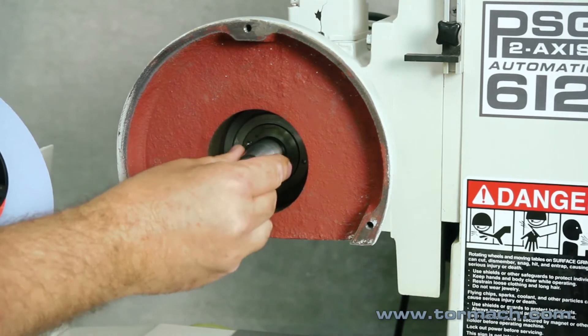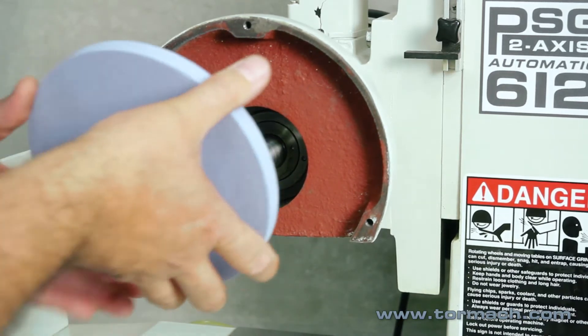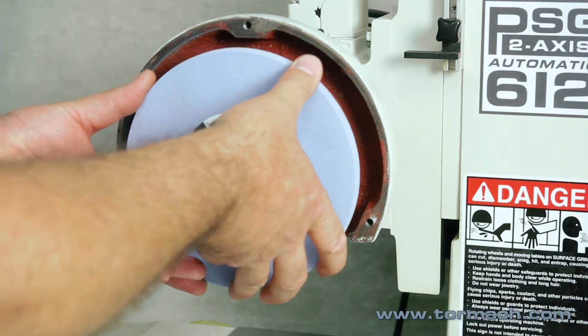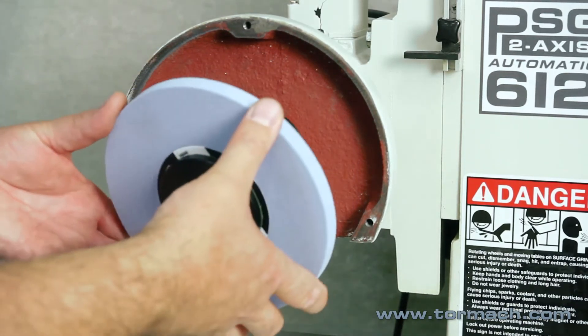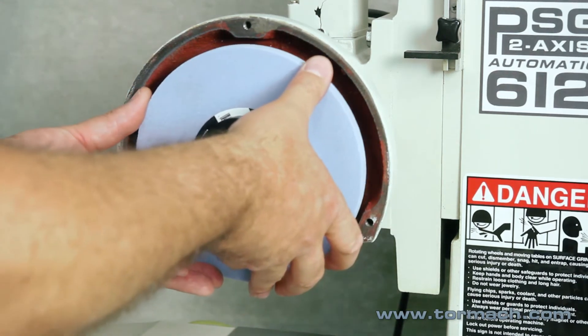Make sure the taper on the spindle nose is clean and then place your wheel on there. Be careful when you're putting the wheel on that you're not banging around on those tapers. Just be real careful and slide it on there.